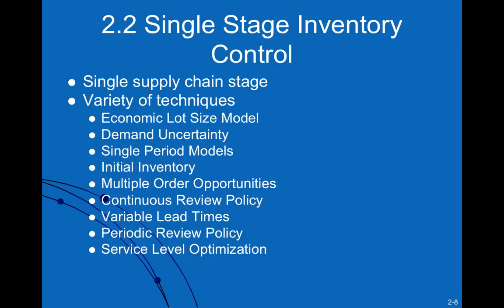Initial inventory has implications for how much you need to produce. If you have a particular demand, your initial inventory can offset some of that demand, determining what you actually need to produce. If the quantities needed are small because initial inventory already covers most demand, there may be cases where it doesn't make sense to produce at all, because the fixed costs associated with producing that small quantity might outweigh the profit gained from the additional output.